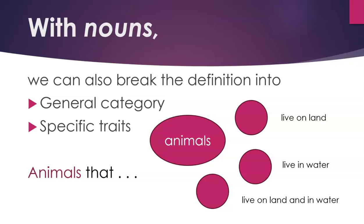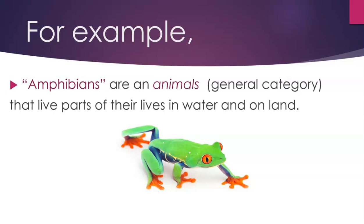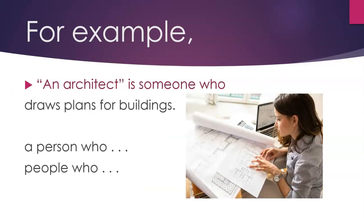With nouns, we can also break the definition into two parts: a general category, and specific traits. For example, a general category might be animals; specific traits might be live on land, live in water, or live on land or in water. For example, amphibians are animals that live parts of their lives in water and parts of their lives on land. Another example: an architect is someone who draws plans for buildings.